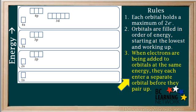The third rule states that when electrons are being added to a set of orbitals at the same energy — for example, the group of the three 2p orbitals — as they are added, new electrons will enter a separate orbital before they start pairing up. How this works will become more evident as we show examples.